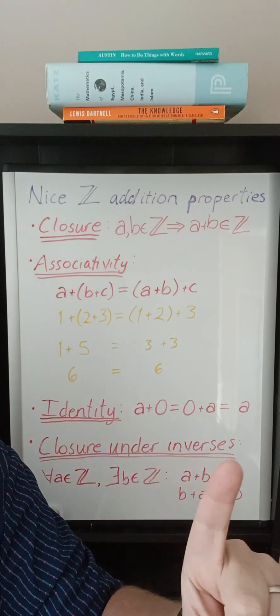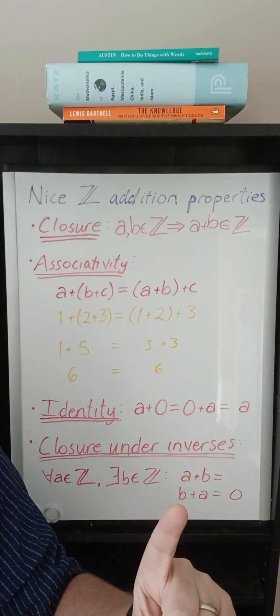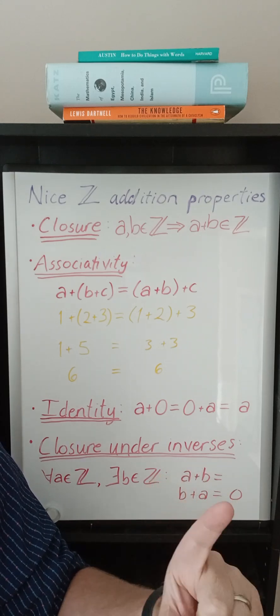And then also that it's closed under inverses, meaning that if you pick any element then there is some other element such that you can add them together and get zero.